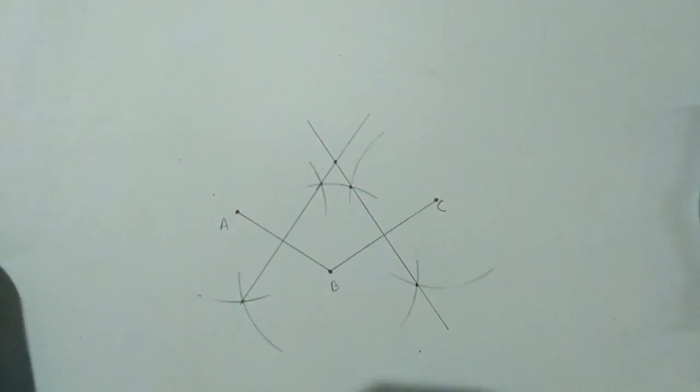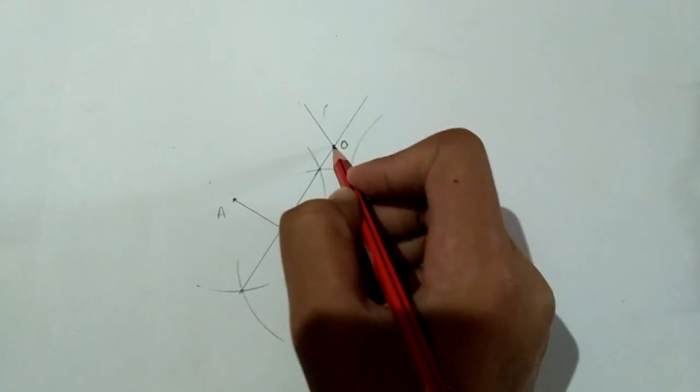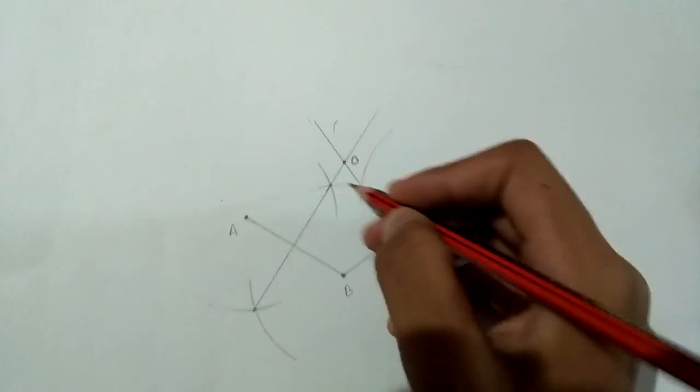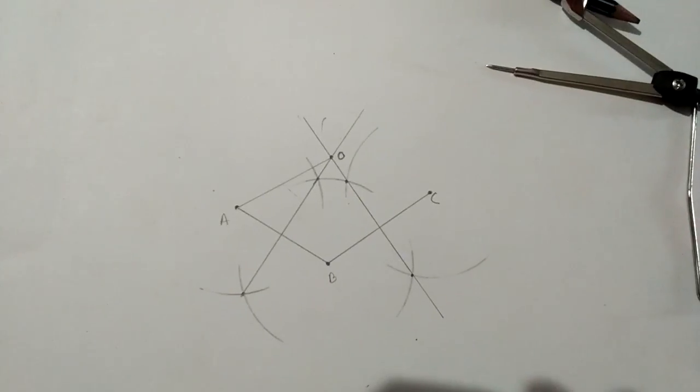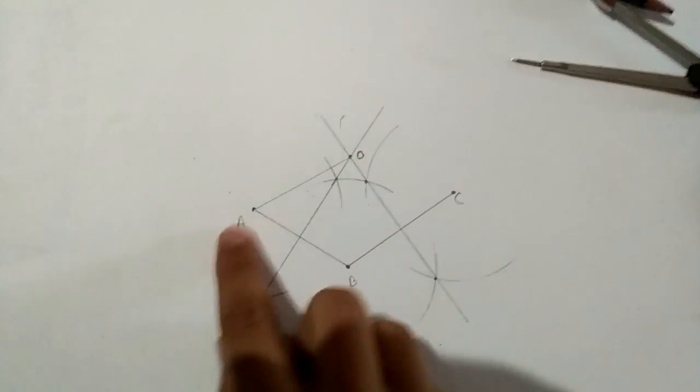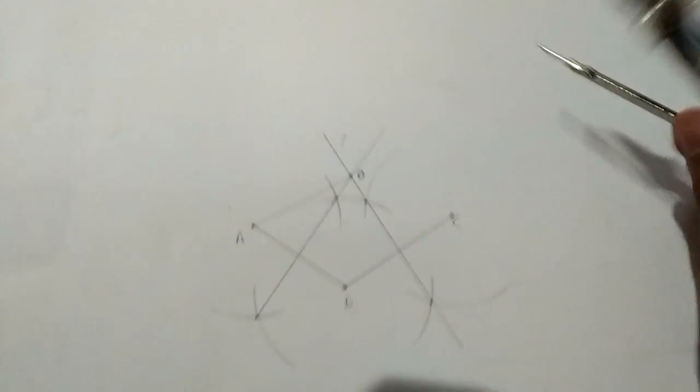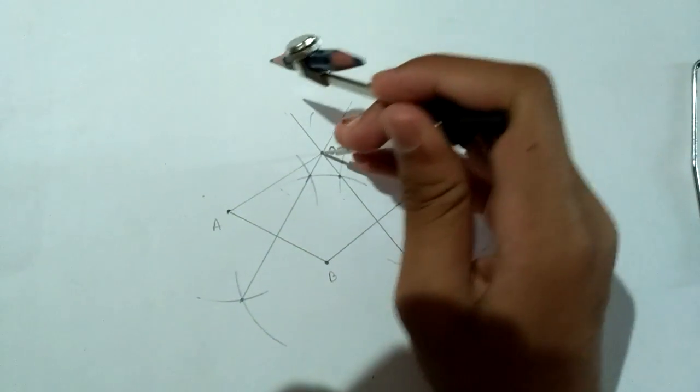Keep the point here. I am marking it as O. You can draw the radius by taking these two points. OA is the radius of the circle. It's very simple. Now keep the point here at the center O.